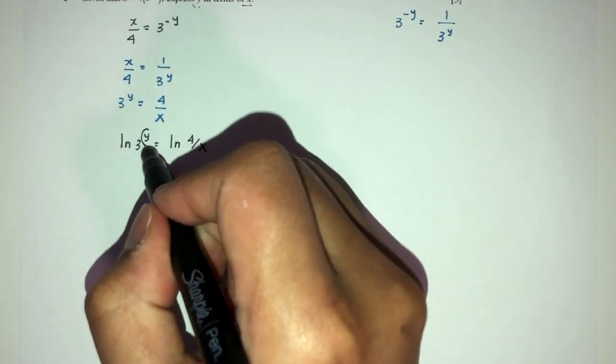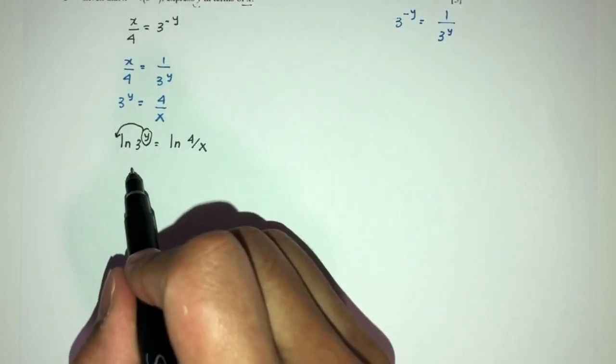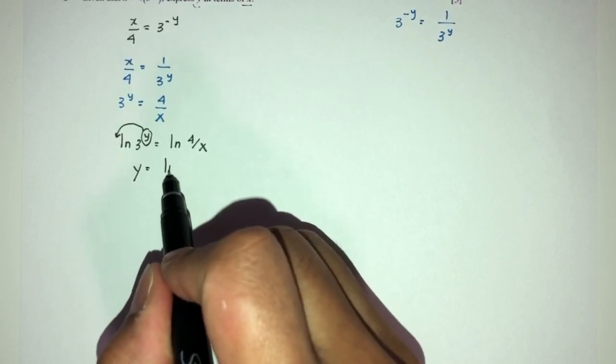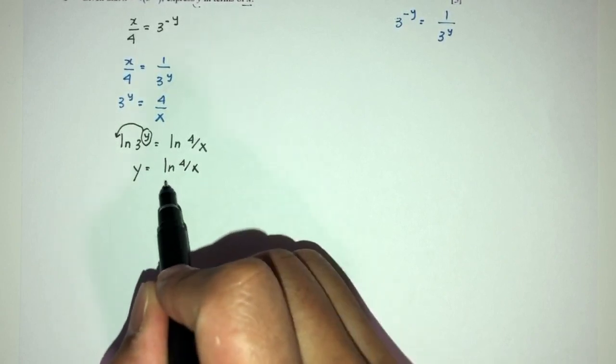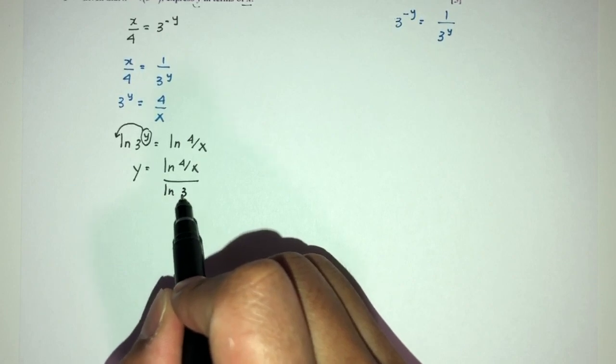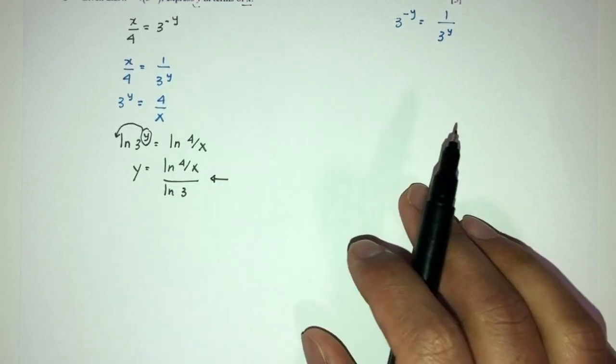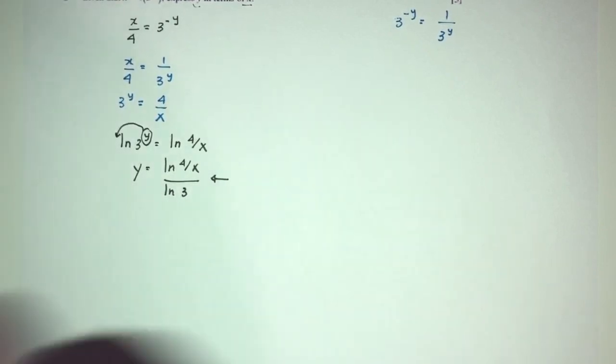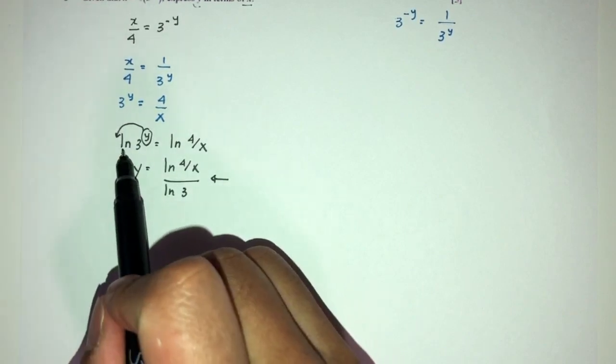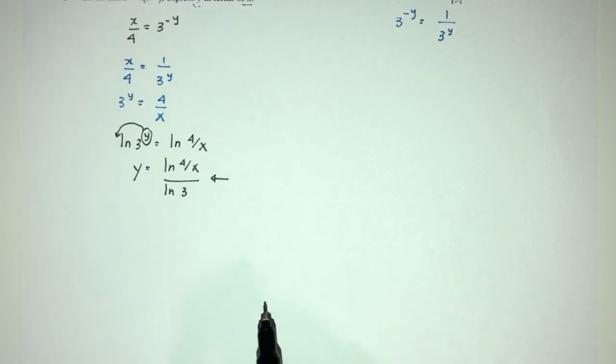This will come over here. So, y will become ln 4 over x divided by ln of 3. This is how you make y become the subject of your formula. You could have used log as well. It is the same thing.